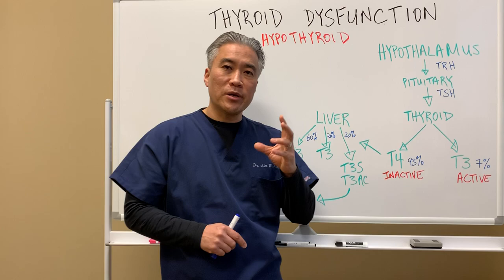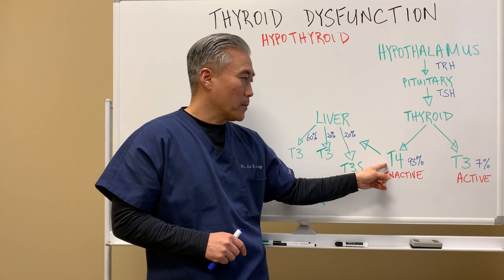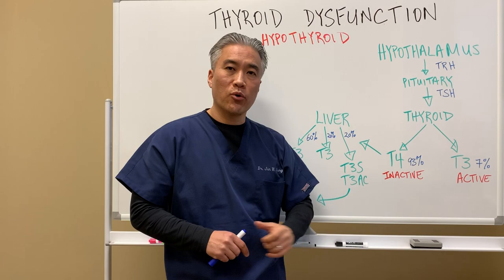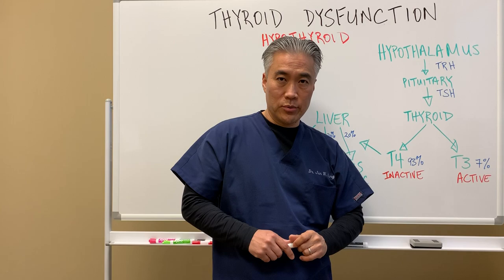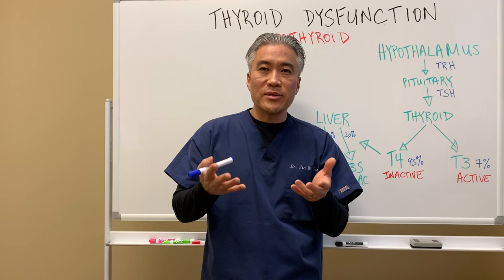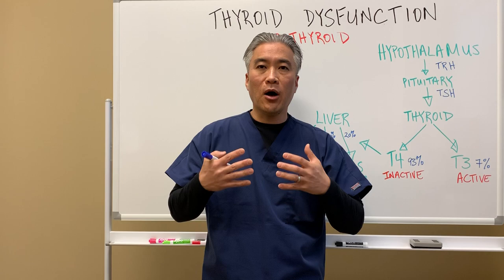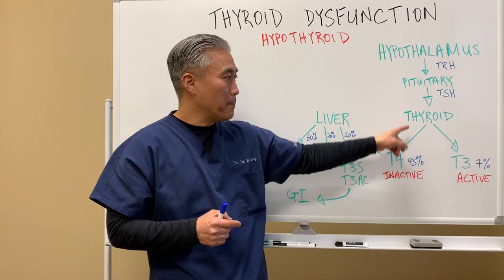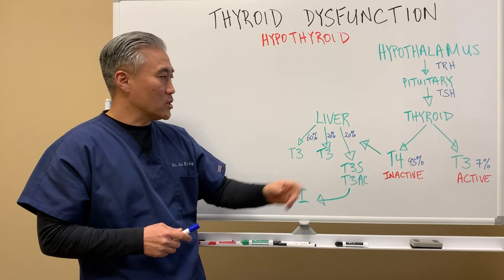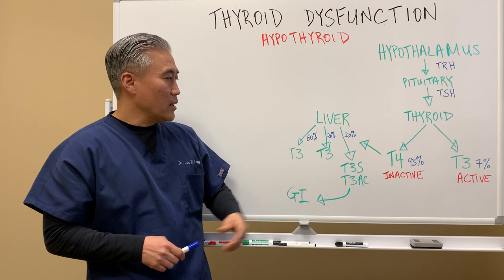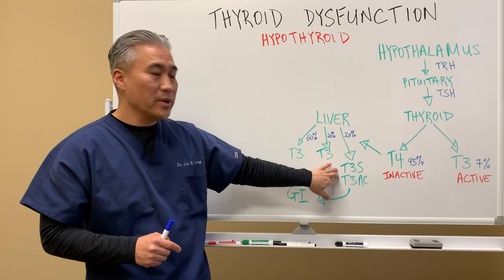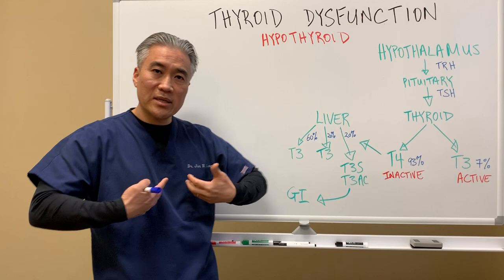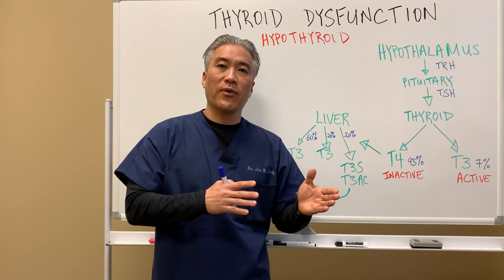The thyroid predominantly produces inactive thyroid hormone T4 — about 93% — and only about 7% active T3. Because the thyroid produces mostly inactive hormone, it has to go through other end organs to convert T4 to T3. The liver converts about 60% of T4 into active T3, another 20% remains inactive, and the remaining 20% goes as intermediaries to the GI tract, where gut bacteria help convert thyroid hormones from inactive to active.